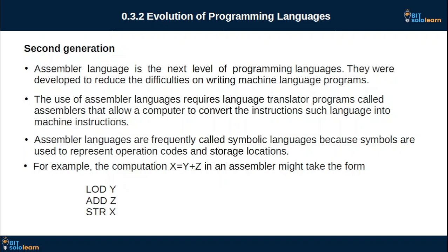We will use the computer language translator. We will use the symbolic language. We will use the symbols to represent the code in the program. The next method is to use x, y and z. This program is: load y, add y, and store x. This is the same instructions for the assembler language. This is the translator. This is the computer language object.